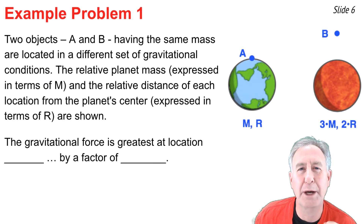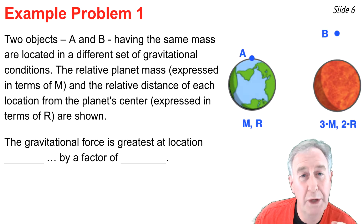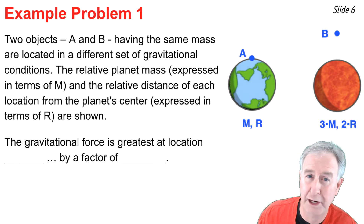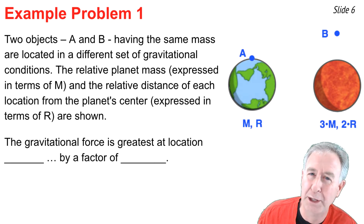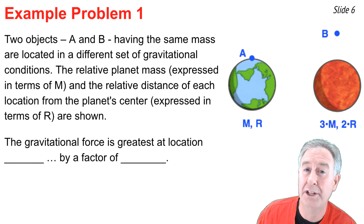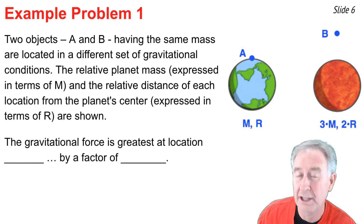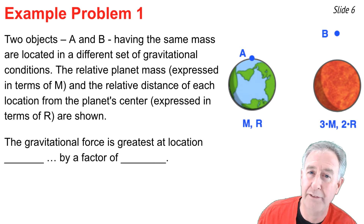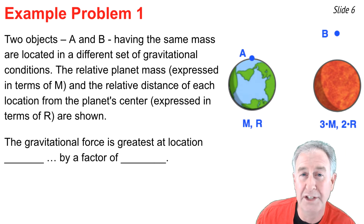Let's do a practice problem, and a rather difficult one. We have two objects with the same mass but different gravitational environments. Object A is on a planet that has one-third the mass of the planet object B is on, and object A is two times closer to that planet's center than object B is to its planet's center. We need to figure out which object — A or B — has the greatest force of gravity toward its planet, and by what factor.